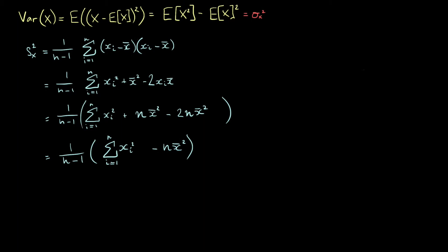There's a nice parallel with the population variance formula. Our first term — the sum of xi squared divided by n minus 1 — is like the expected value of x squared. Our second term — n over n minus 1 times x-bar squared — is nearly the square of the expected value. The only differences are the corrections we've had to make because this is the sample variance, not the population variance.